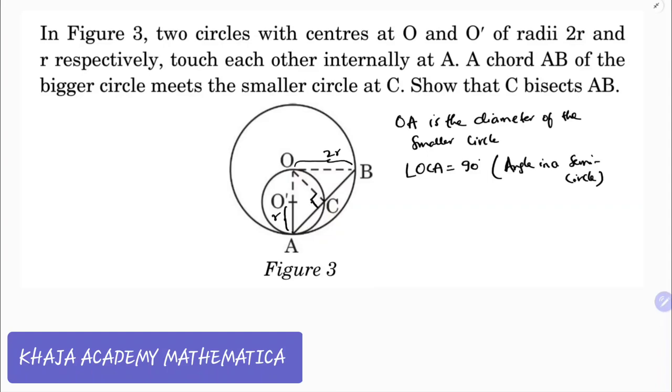big circle has its center O, so OC is perpendicular to AB. See, if a perpendicular is drawn from center to the chord,